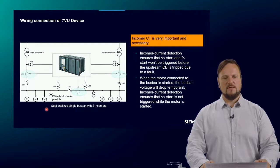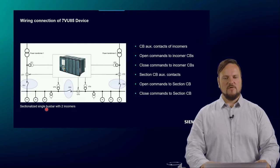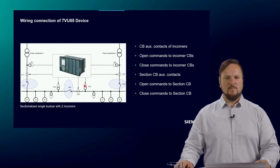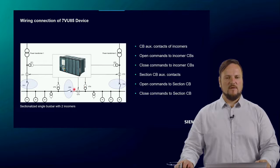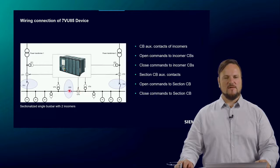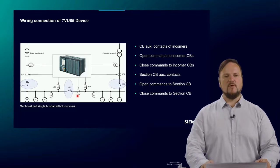We also need the circuit breaker position — auxiliary contacts of the incomer, open commands, and close commands of the incomer, and on the section CB as well. One important note: the current transformer on the section CB is not necessary. With version 9.30 and 9.40, the CB without current function was implemented. It is therefore not necessary to add current to that CB — you can use the new function group CB without current and save some money on additional current inputs.